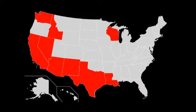Property owned by one spouse before the marriage is sometimes referred to as the separate property of that spouse, but there are instances in which the community can gain an interest in separate property, and even situations in which separate property can be transmuted into community property. The rules vary from jurisdiction to jurisdiction.